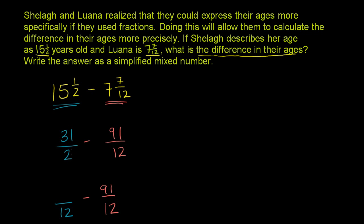Now on the blue one, to go from 2 to 12 in the denominator, we have to multiply by 6. So we also have to multiply by 6 in the numerator. So if we multiply 31 by 6, what do we get? And you can even do this in your head. 6 times 30 is 180. 6 times 1 is 6, so it's going to be 186.